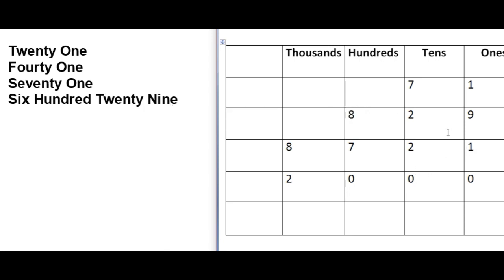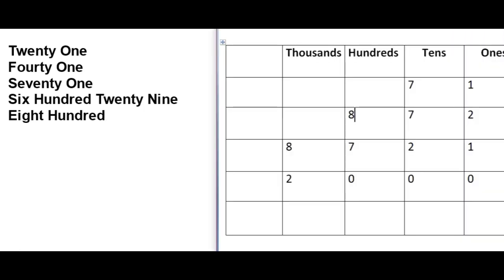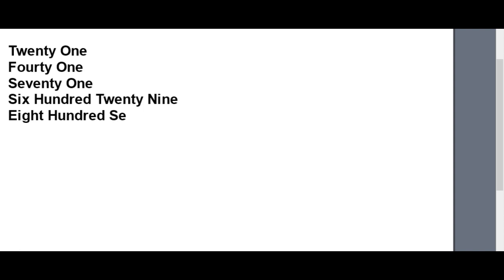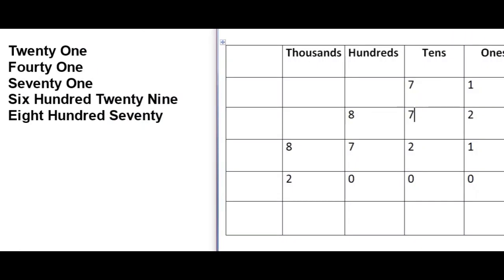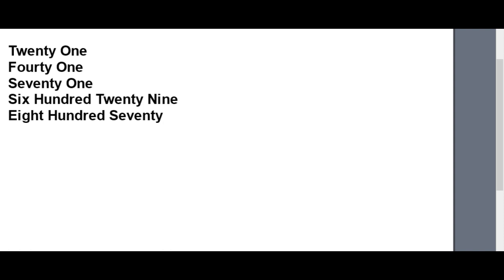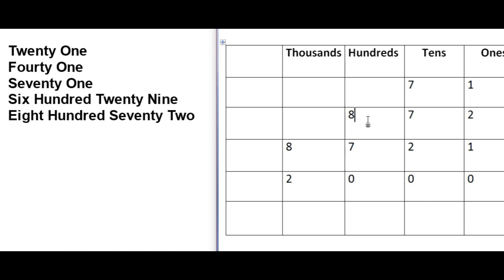If I will change it to 8, 7, and 2, then what will we write? Again we will start from here. 8 is in the place of 100's, so it is 800. 7 is in the place of 10's, so we will write 70. And 2 is in the place of 1's, so we will write normally 2. We call this number 872.